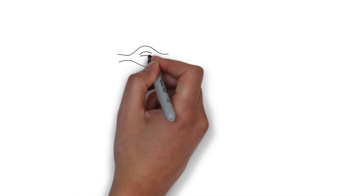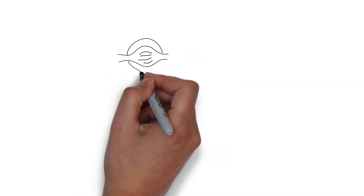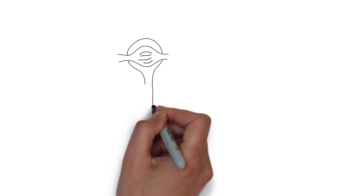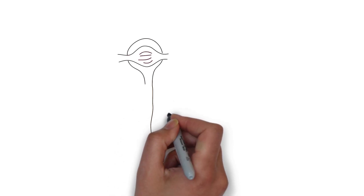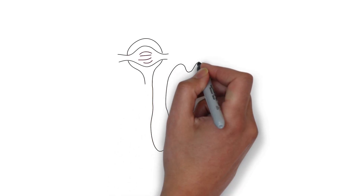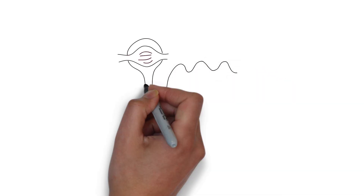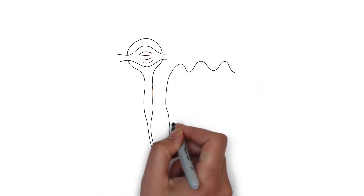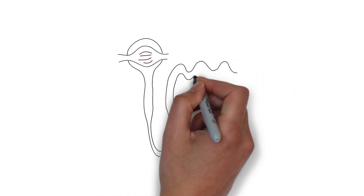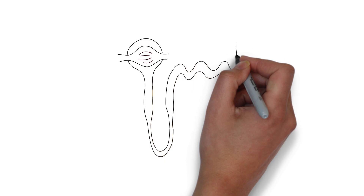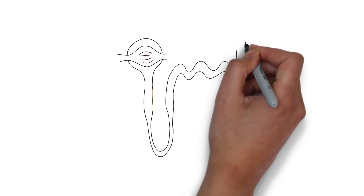The functional unit of the kidney is the nephron, which consists of the glomerulus, the proximal tubule, the loop of Henle, the distal tubule, and the collecting ducts.